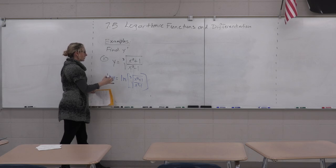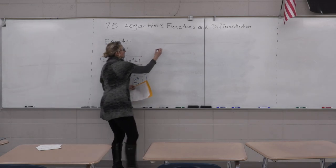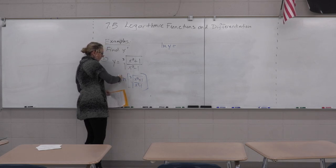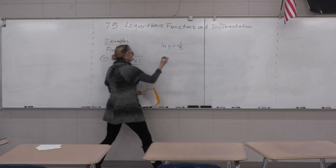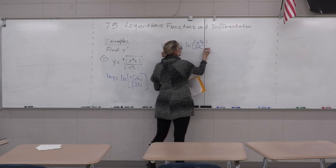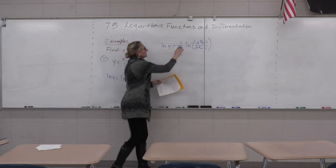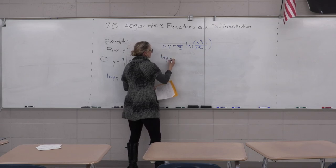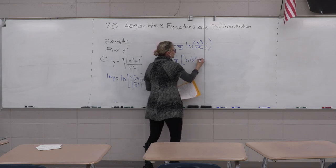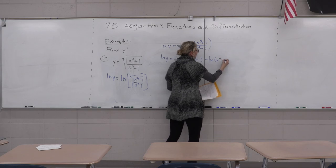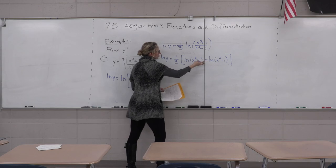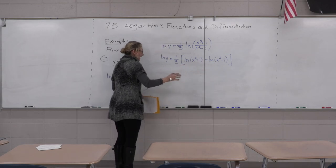Apply natural log properties. Bring the one-third power down front: natural log of y equals one-third times the natural log of the quotient. Then split the quotient: one-third times the quantity natural log of x squared plus one minus natural log of x squared minus one. Now differentiate both sides.